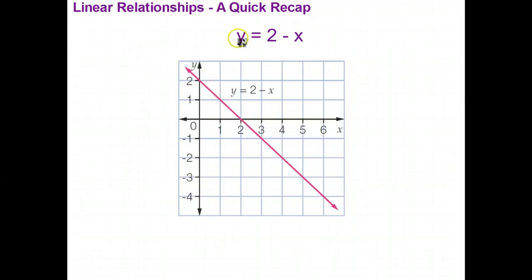And if you plotted all of the points with coordinates x, y that fit that relationship, that made that relationship true, they would all lie on this straight line. So because that rule, or that type of rule, gives us a graph that looks like a straight line, it's called a linear relationship.